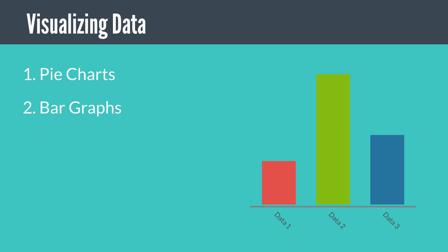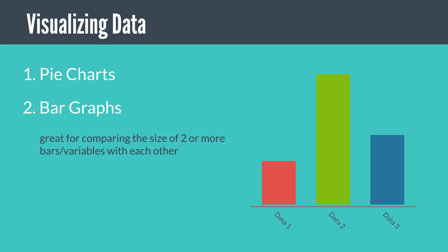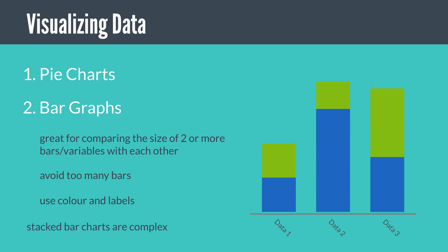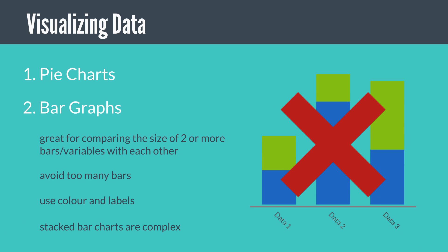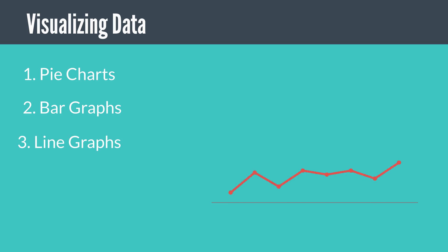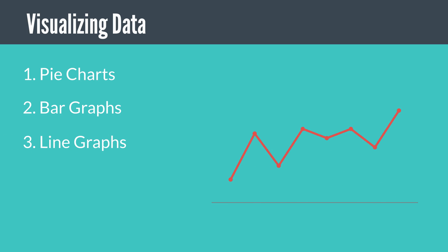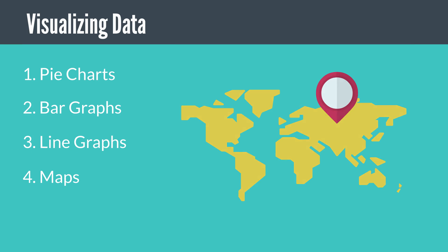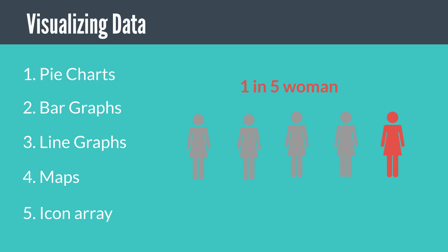Secondly, bar charts. These are great for comparing the different variable sizes or bars with each other. Avoid too many bars or variables, use colors and labels, and avoid stacked bars if possible as they can be confusing and complex. Line graphs are great for showing change over time. Maps are useful for showing location, and icon arrays are great for showing frequencies.